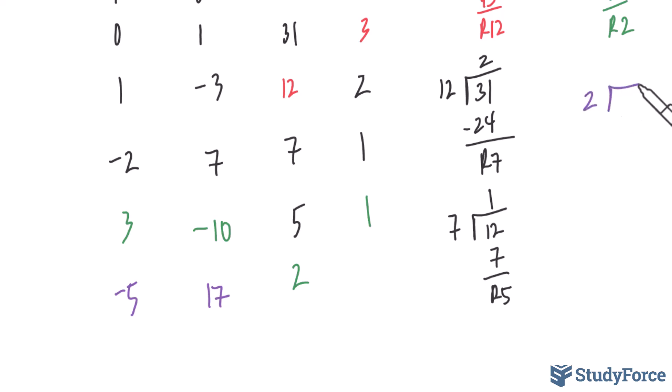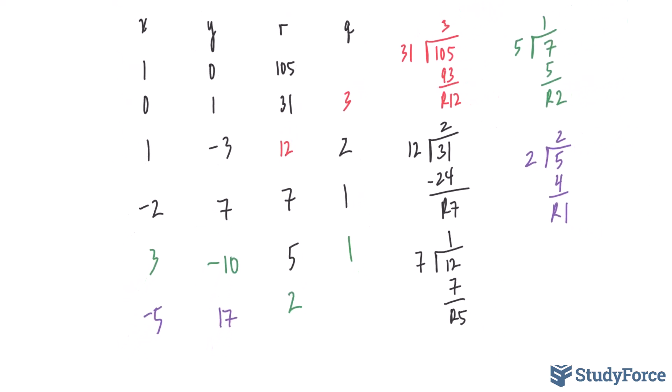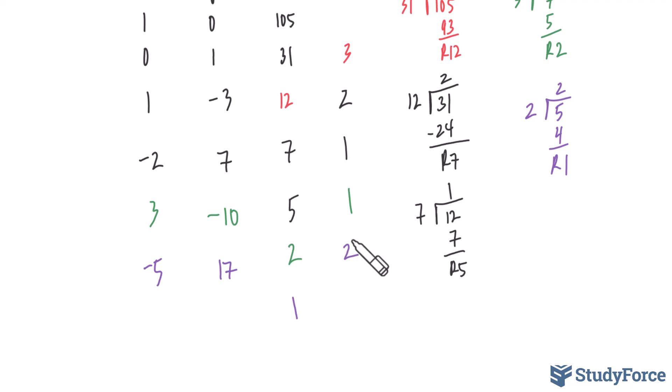5 divided by 2 gives us a remainder of 1. So we place our remainder here and our quotient here. Since we've reached a row where the remainder is 1, we repeat the cycle one last time. 2 times negative 5 is negative 10. 3 take away negative 10 is 13. 2 times 17 is 34. Negative 10 take away 34 is negative 44.